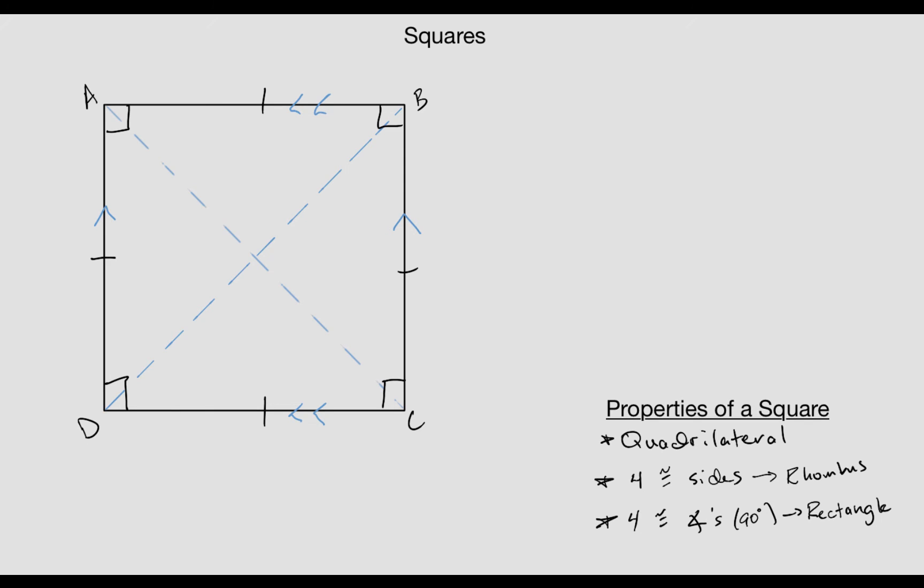I'm going to add in our diagonals here. We know a lot of information about those as well. One, we know that they are perpendicular bisectors of each other, and also that they bisect the vertices.